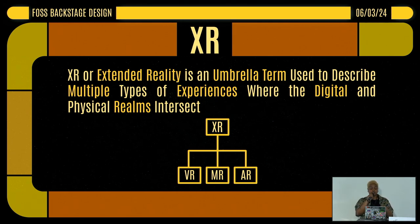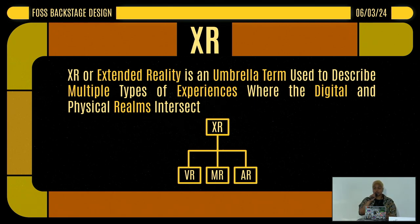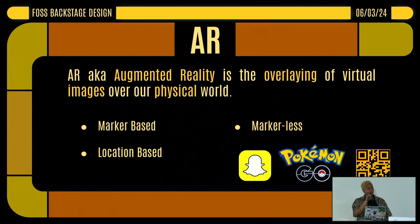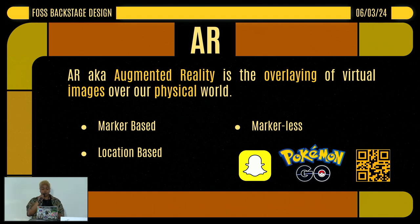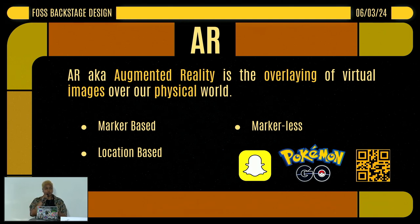XR encompasses three different types of pillars: virtual reality, mixed reality, and augmented reality. AR, or augmented reality, is an overlaying of virtual images over our physical world. There's marker-based, markerless, and location-based AR. For an example of location-based, that would be Pokémon Go. Marker-based would be QR codes where you scan a QR code and a 3D image comes up. And Snapchat is an example of markerless, which includes Snapchat filters and things like that.